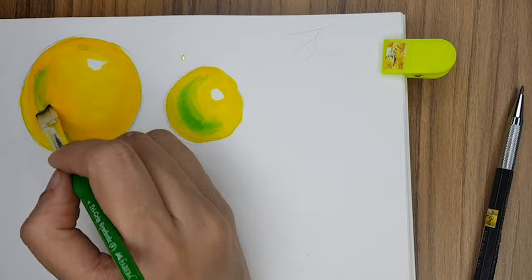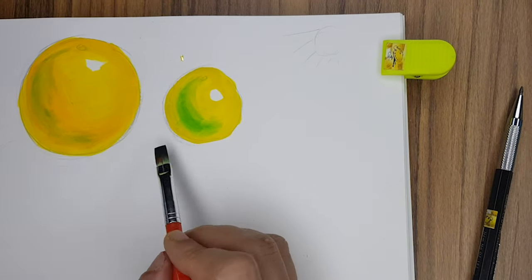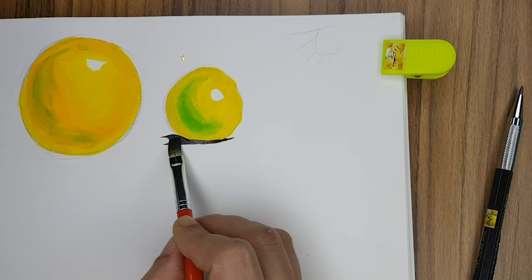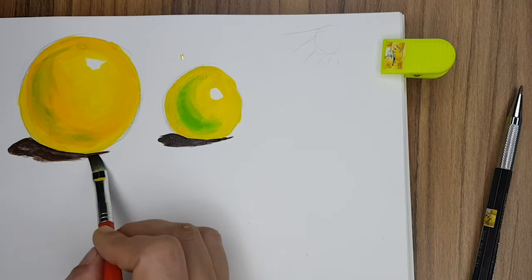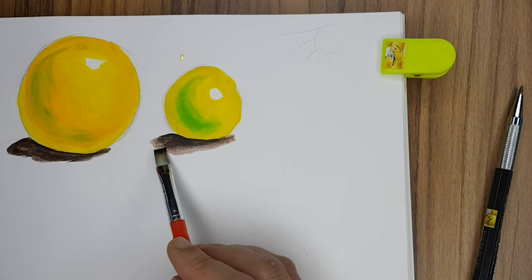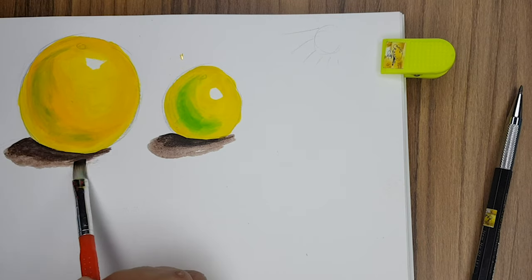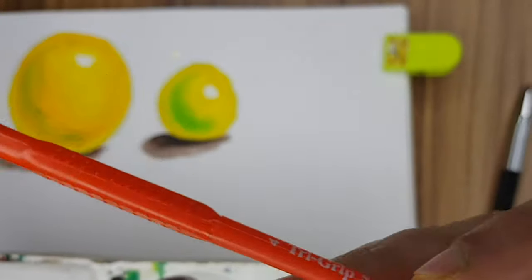Now it's time to make the shadow. For the shadow, I have used Prussian blue plus burnt sienna, and then blended it with water. After you've done this, quickly take the same color and make the small spot that you see on top of the lemon and the sweet lime.